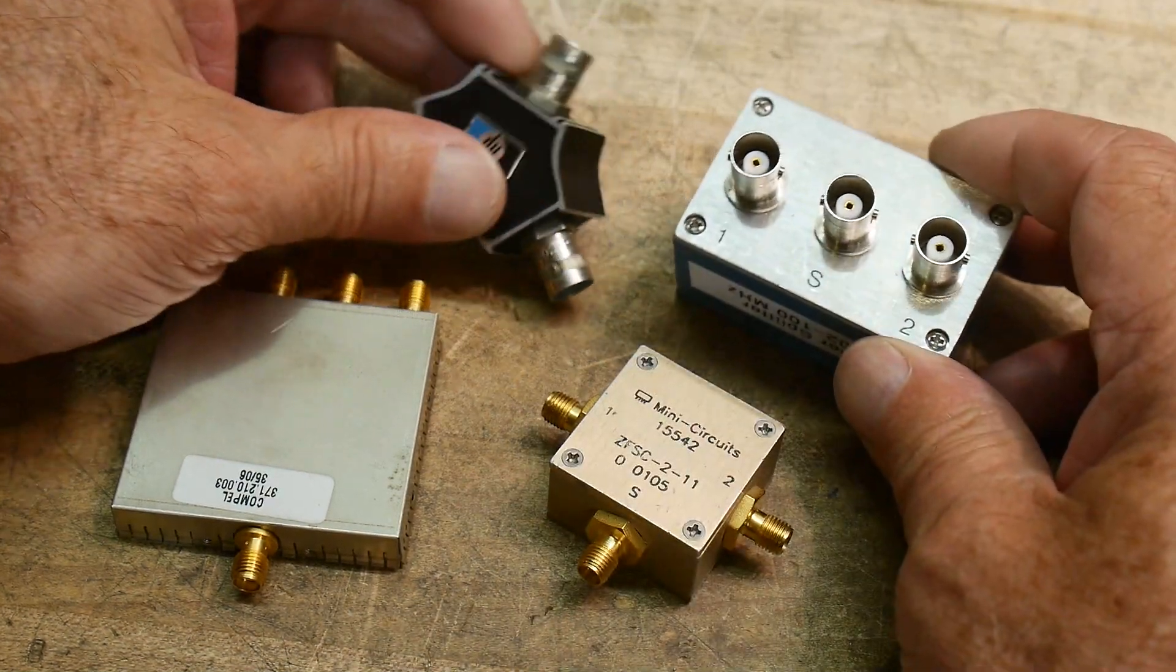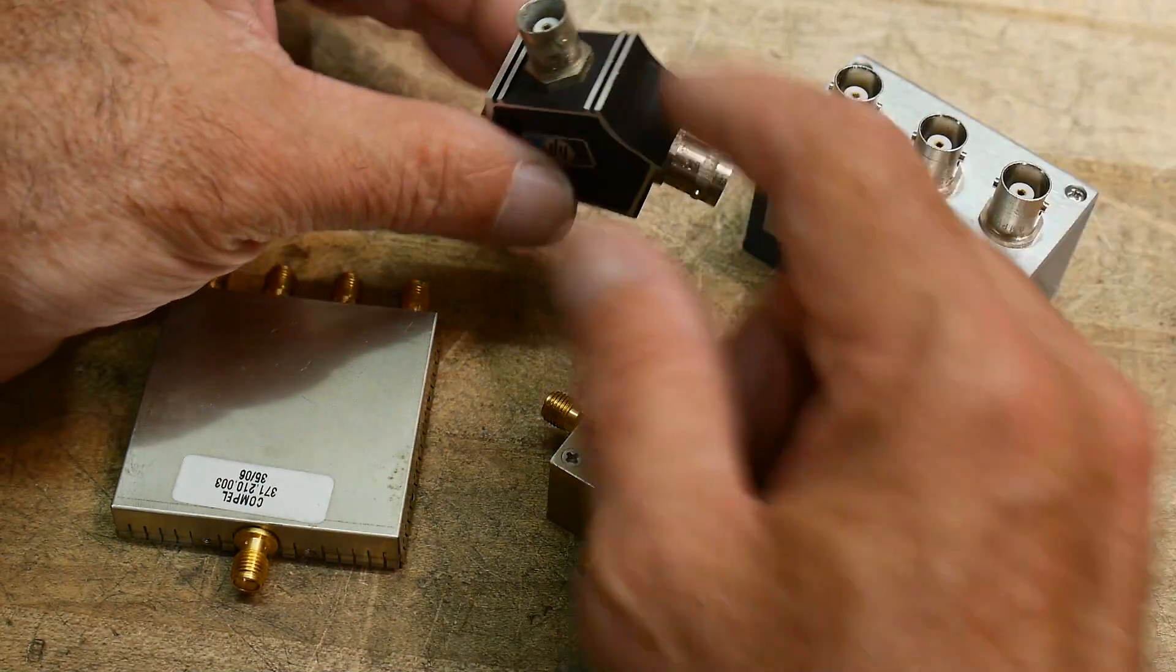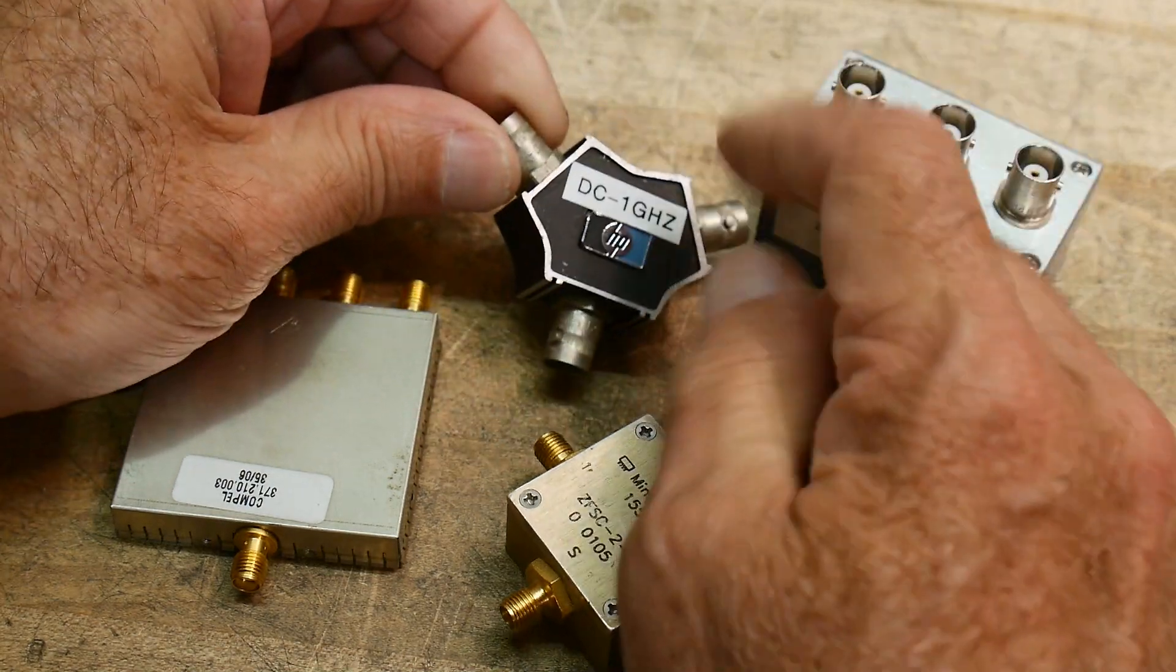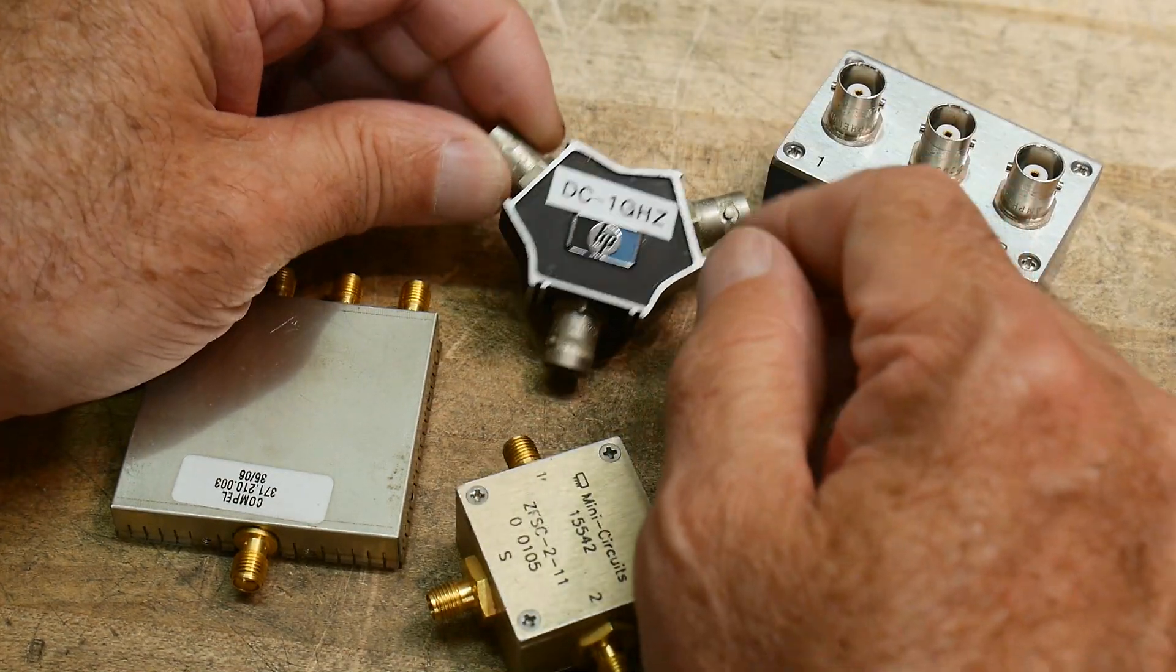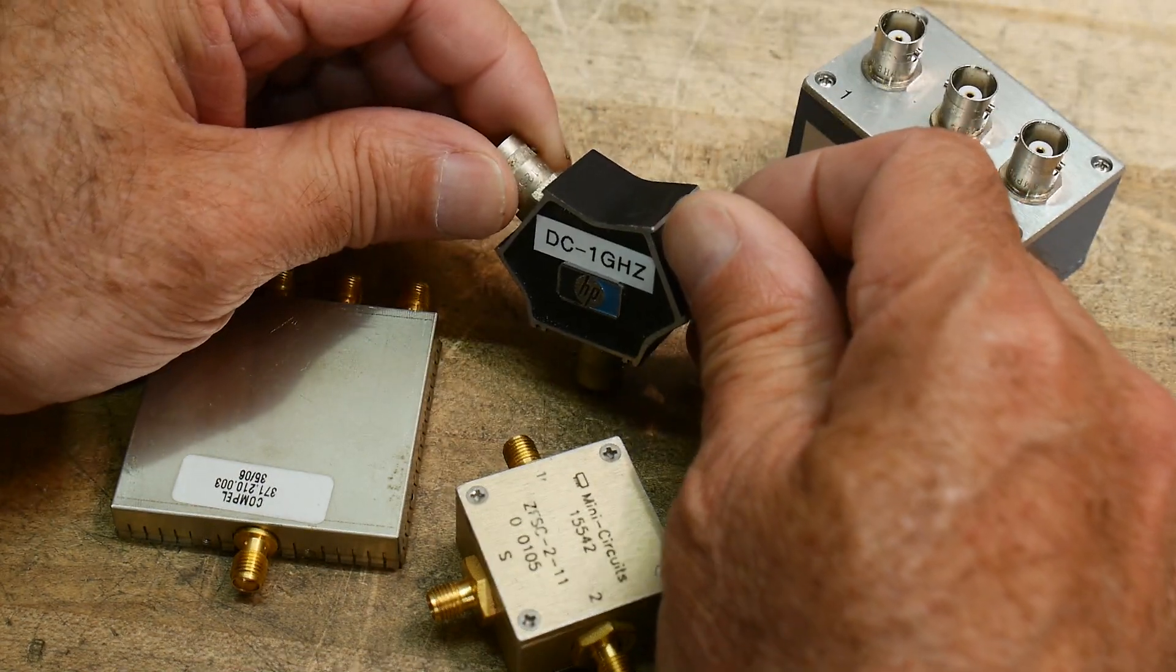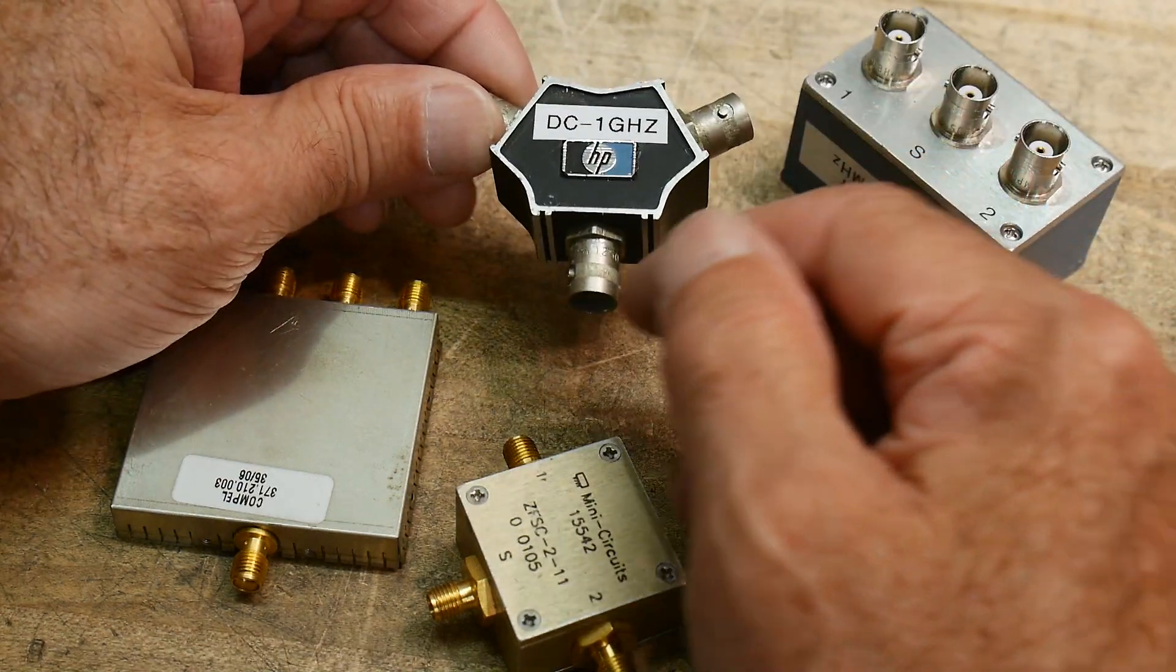And different frequency ranges and different power levels and stuff. This is a really old one, this one's DC to one gigahertz. This is from Hewlett Packard, this was part of a kit that was part of some test kit for something. I don't remember what it was, vector voltmeter or something.